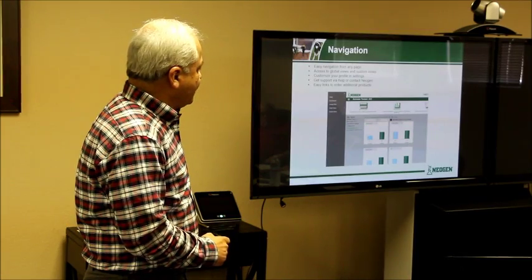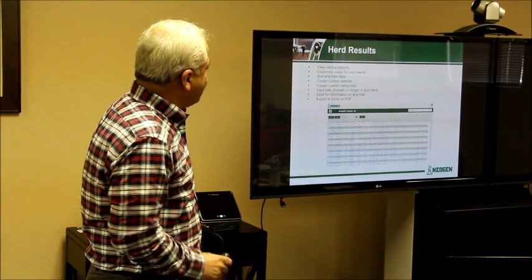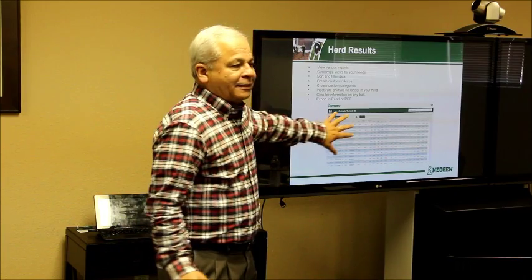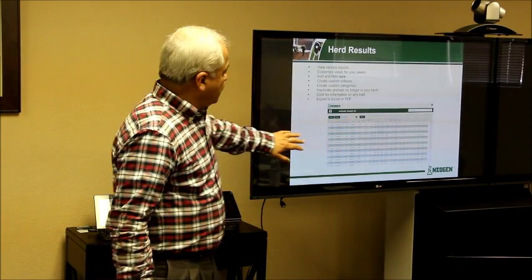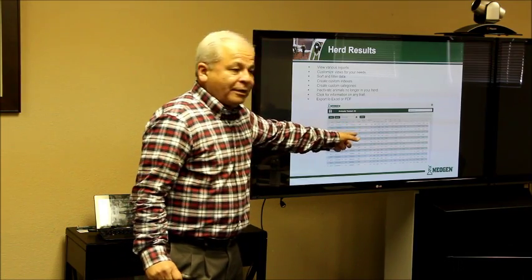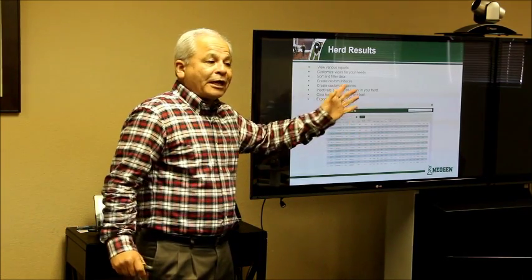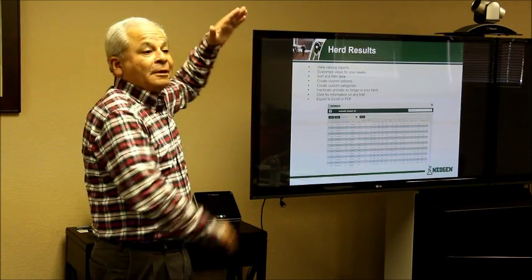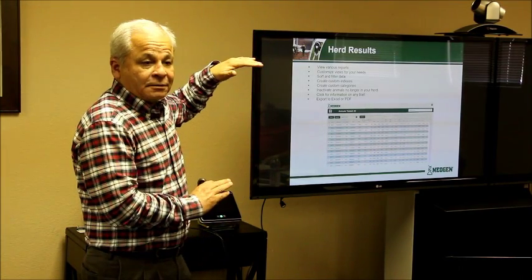Another thing that you can do with this website — for example, this is how at the beginning the results come out. Let's say that you are judging by net merit. So you can put it in a descending way from the top to the bottom, and you can lock it.